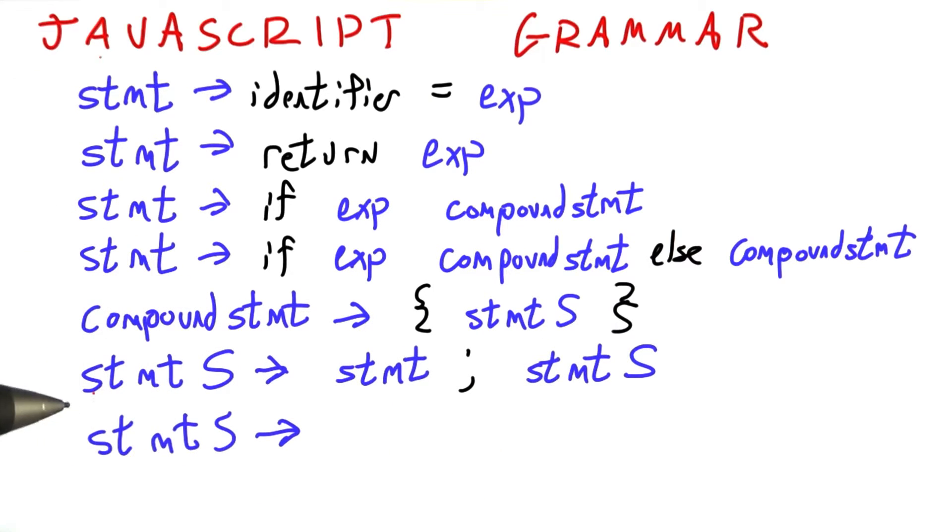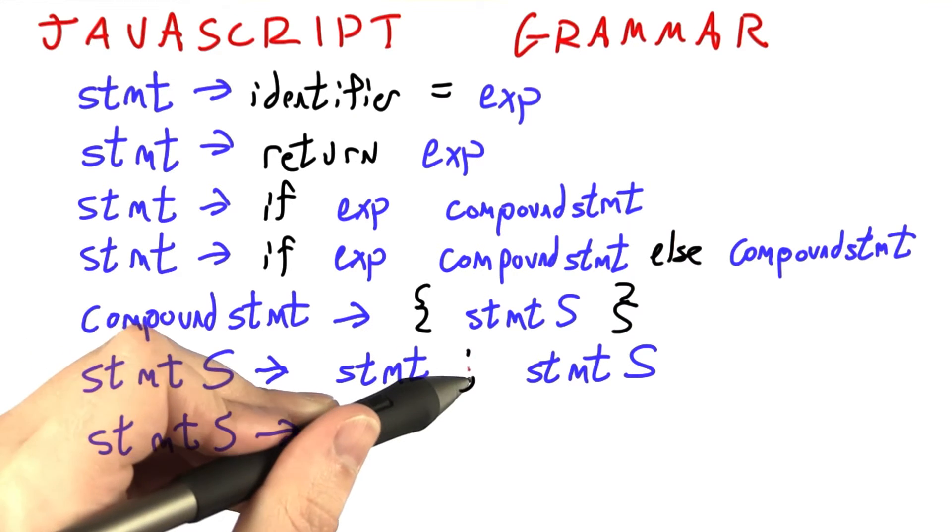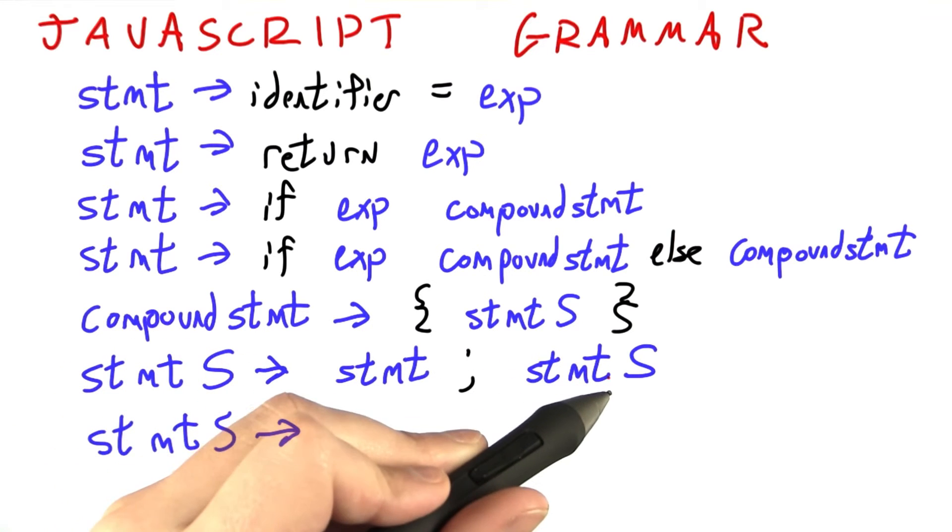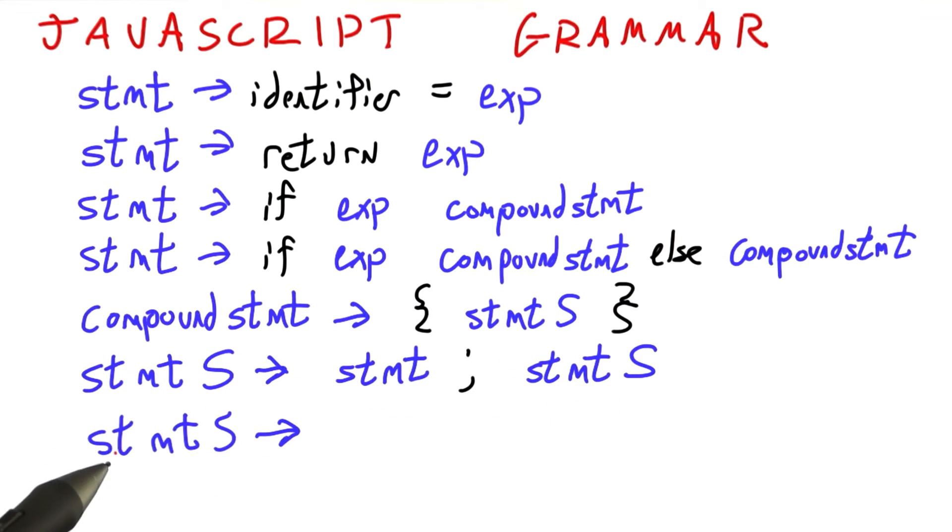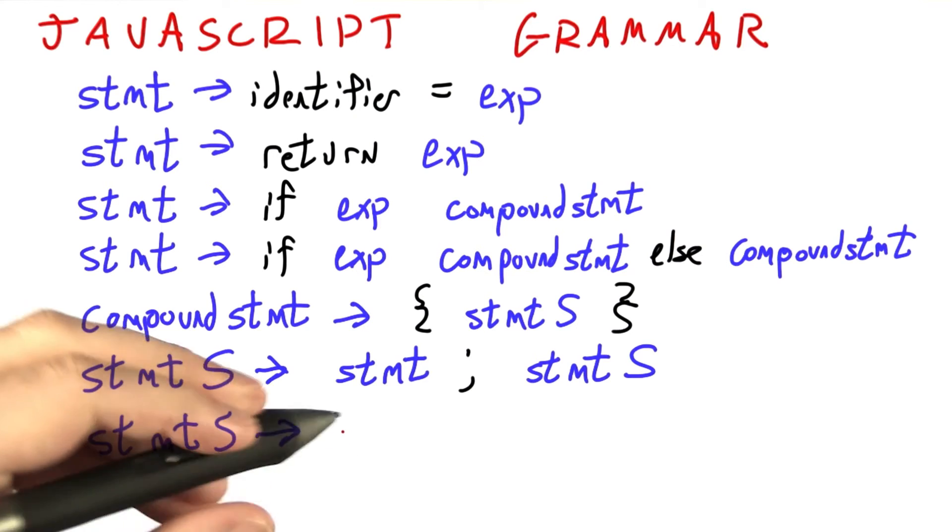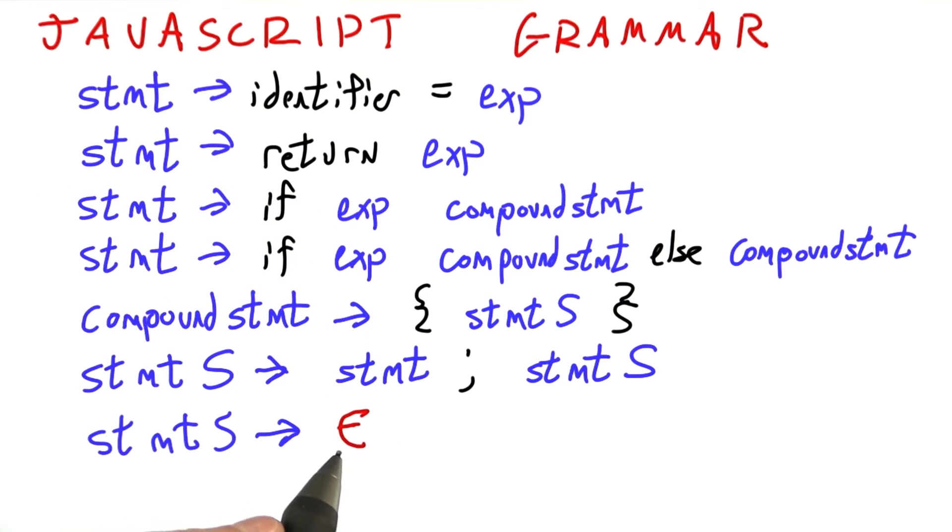So here I've added a recursive grammar rule. Statements can be one statement followed by a semicolon, followed by as many more statements as you like, or you can decide that you're done and replace it with nothing. Or if you like, we'll draw the epsilon there to mean the empty string.